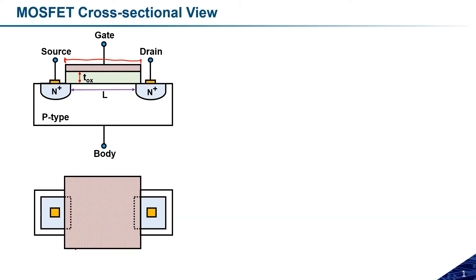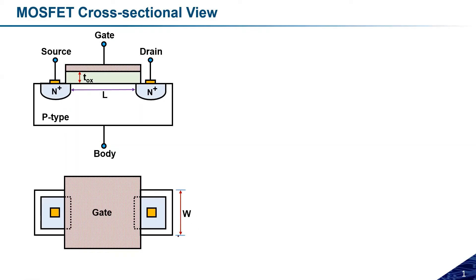All capacitances associated with the MOSFET are distributed capacitances, depending on the different terminals: source, drain, gate, and body. I'm considering only capacitances associated with a single MOSFET transistor, not those from interconnect wires. Looking at the device from the top, we can see the gate width — the device extends in the width direction, which wasn't visible in the cross-sectional view.